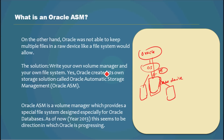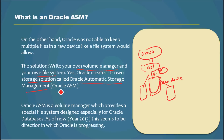There are pros and cons in each method. So what Oracle did was write its own volume manager, which brought the best from both scenarios. Its volume manager had its own file system specifically designed for the Oracle database. Oracle called it its own storage solution and named it Oracle Automatic Storage Management, or Oracle ASM. Oracle ASM is a volume manager which provides a specific file system designed especially for Oracle databases. As of 2013, this seems to be the direction in which Oracle is progressing.